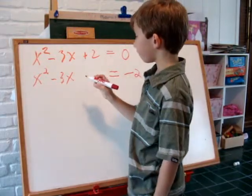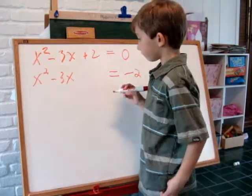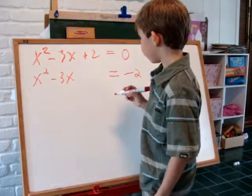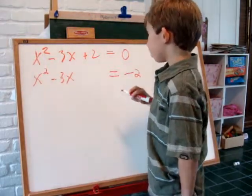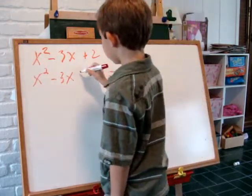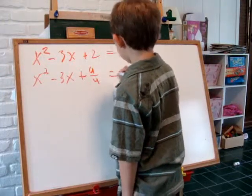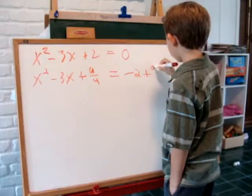Half of negative 3 is negative 3 halves. Negative 3 halves squared is 9 fourths. So we add 9 fourths to both sides of the equation.